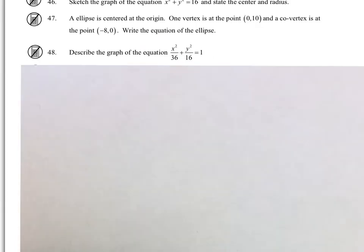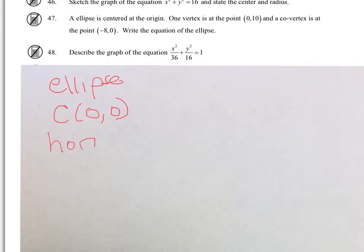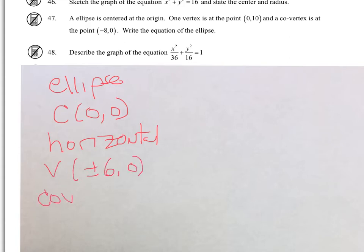To describe the graph, it's an ellipse. The center is at (0, 0). It's horizontal because the larger number is underneath the X. The vertices are at plus or minus 6, 0. The co-vertices are at 0, plus or minus 4.